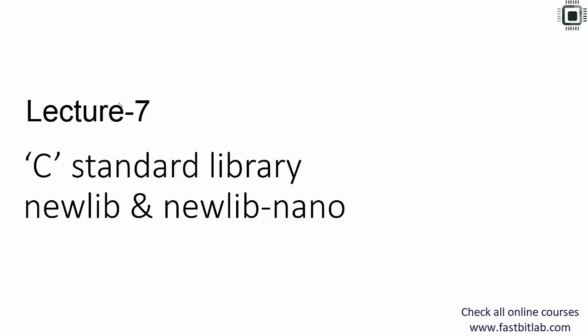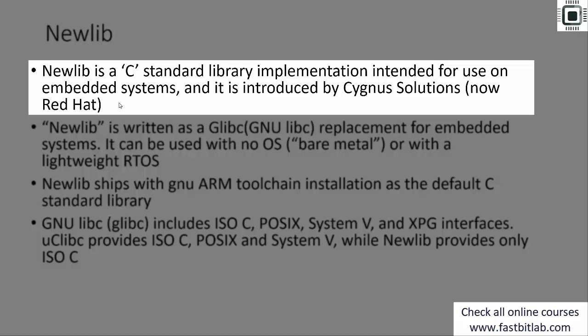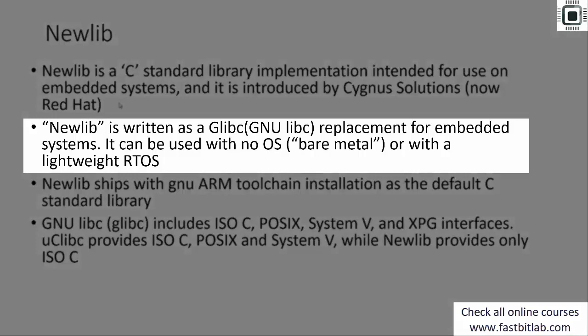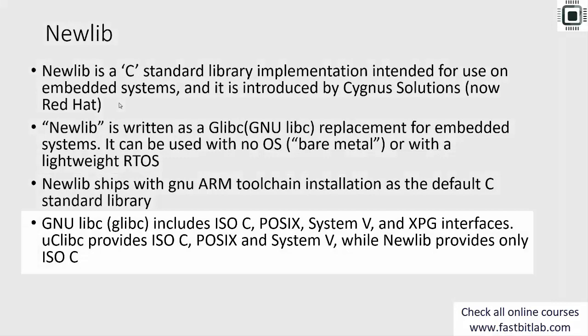Let's link our project with the C standard library. The C standard libraries we'll use are NewLib and NewLib Nano. NewLib is a C standard library implementation intended for use on embedded systems, introduced by Cygnus Solutions, now Red Hat. NewLib is written as a glibc replacement for embedded systems. It can be used with bare metal systems or with a lightweight RTOS. NewLib ships with the GNU ARM toolchain installation as the default C standard library, which we have already installed.